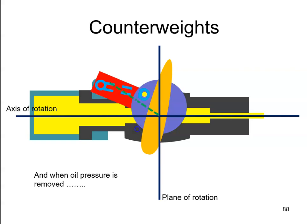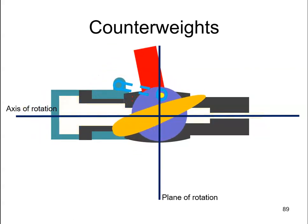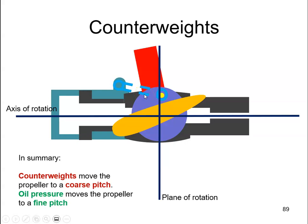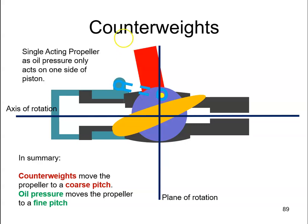What happens if we remove the oil pressure? Well, when we remove the oil pressure, centrifugal force is still acting on the counterweight — it has never gone away. So when we have no oil pressure to counteract it, the propeller will just be brought back to a more coarse position. In summary, the counterweight moves the propeller to a coarse pitch and the oil pressure moves the propeller to a fine pitch. We call this type of propeller a single acting propeller, because the oil was acting only on one side of this piston — not on both sides. That's why we call it a single acting propeller.